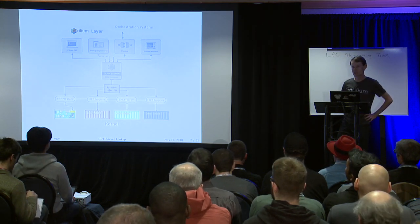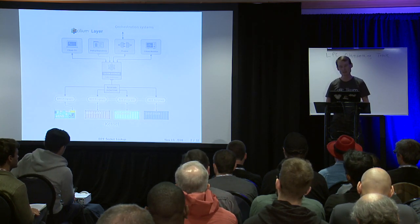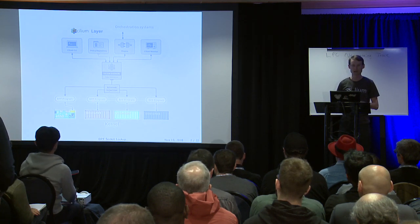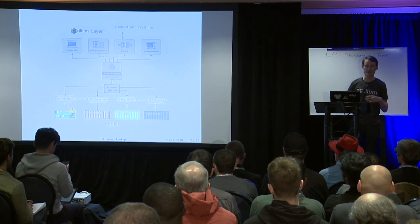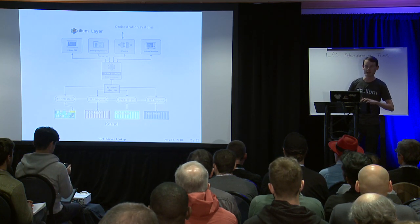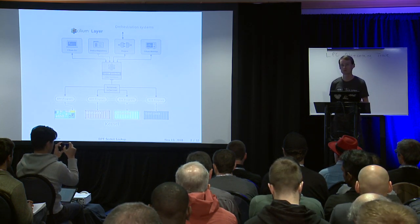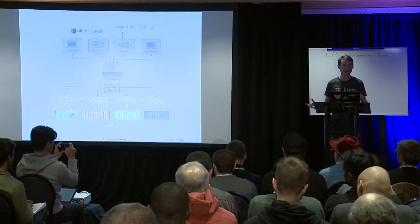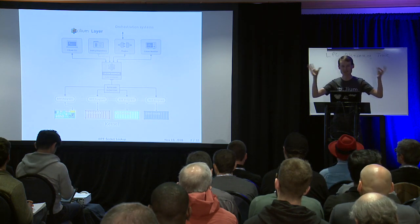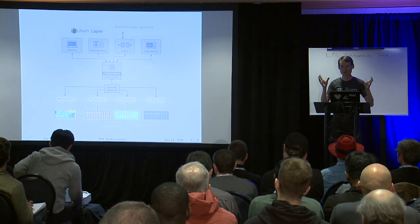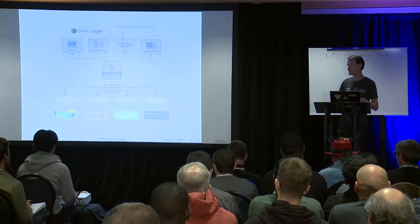Cilium plugs into orchestration systems such as Kubernetes, and is divided into mainly two components. There's a user space daemon written in Go, which provides coordination with the orchestration system for when containers are being deployed. It provides a policy API, visibility into the data path, and the user space daemon generates BPF code and injects it into the kernel.